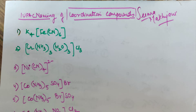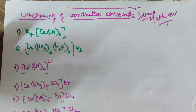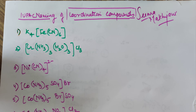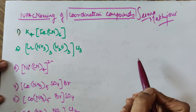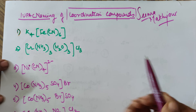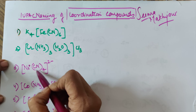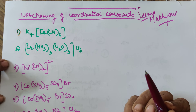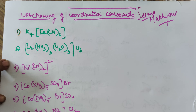Good evening, Class 12. Moving on to the second video of today — the last video was on the list of ligands. If you have not gone through that, please watch the video on the list of ligands, because if you can't name ligands then you can't do the IUPAC of the compound. There are roughly around 25 ligands you should know according to CBSE.